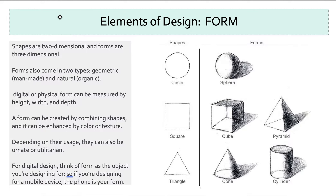Just like shapes, forms can be geometric or organic. They can be digital or physical, and they can be measured by height, width, and depth. A form can also be created by combining shapes, and that is called boolean geometry.